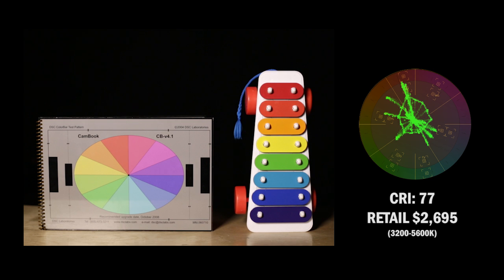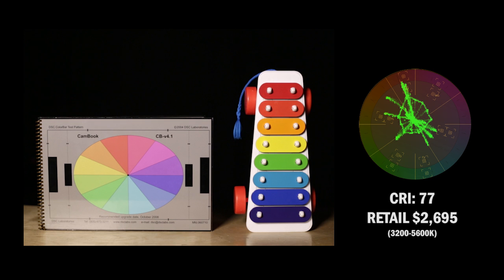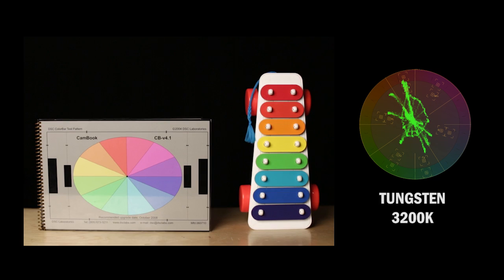So the CRI result doesn't necessarily equate one to one to video. So in other words, video is just dealing with red, green, blue, whereas the CRI rating is dealing with all the colors of the spectrum. So that is sort of an important note that the number itself doesn't necessarily tell you everything. That being said, let's move on to the next comparison.